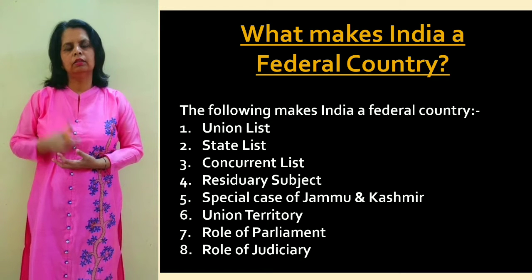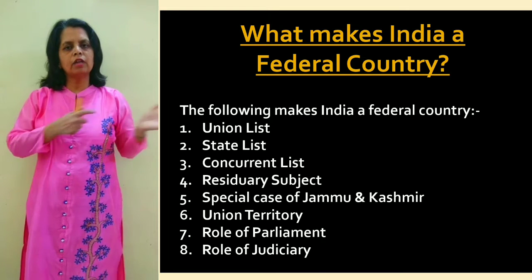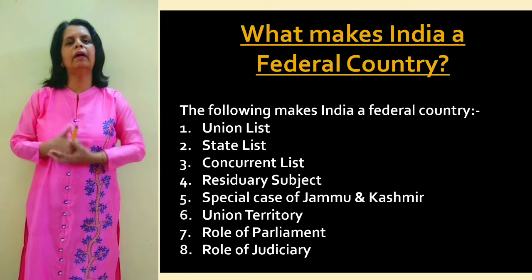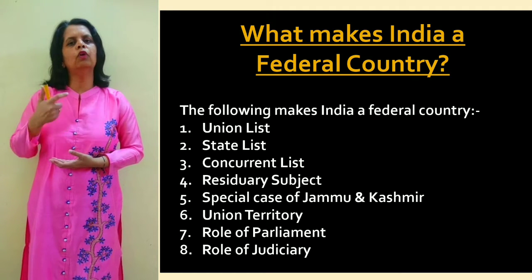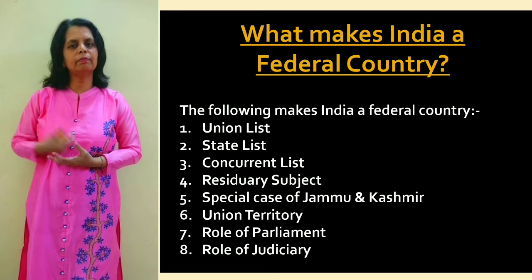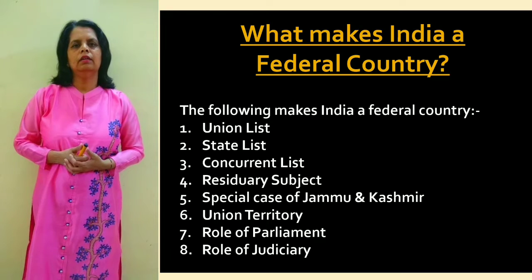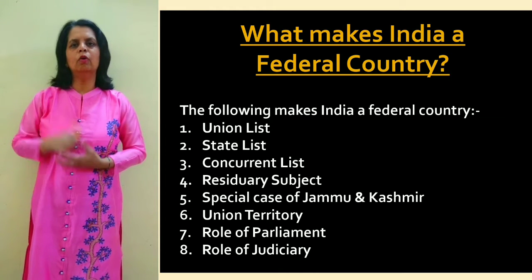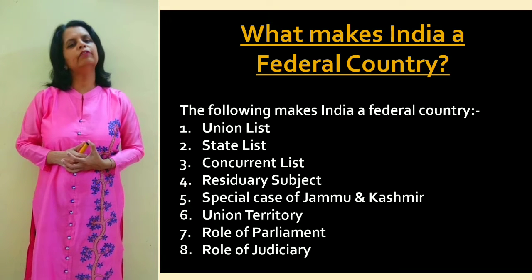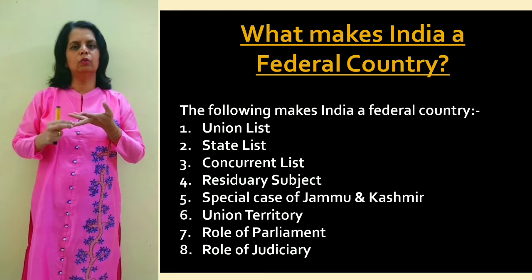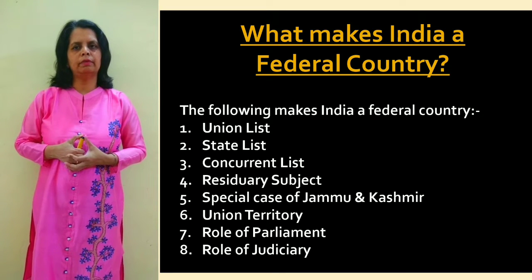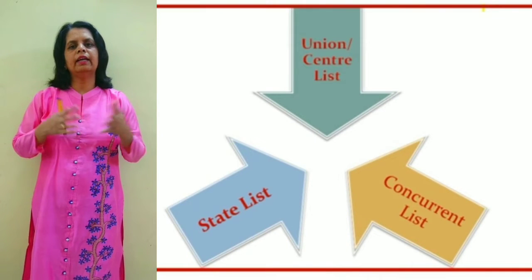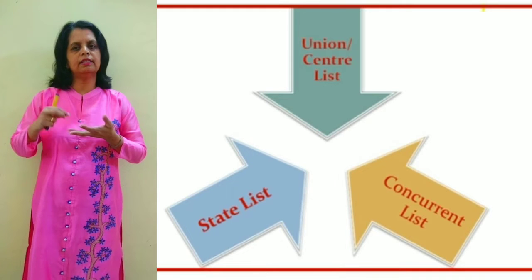The constitution has provided a threefold distribution of power. There are more than two levels of government - the central government, the state government, and local self-government. Based on these principles, subjects have been divided into three broad categories: the Union List, the State List, and the Concurrent List. The Union List contains subjects of national importance such as foreign affairs, defense, and communication. Rules for these are framed only by the central government to maintain uniform policy throughout the country. There are 97 subjects in the Union List.